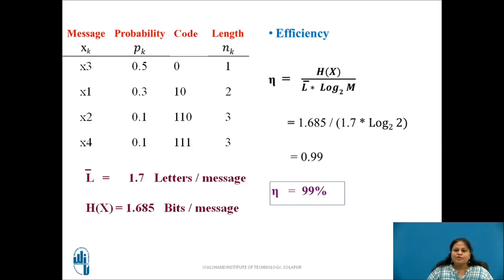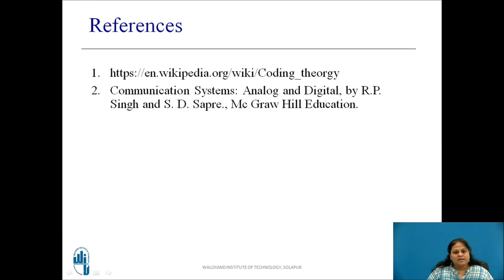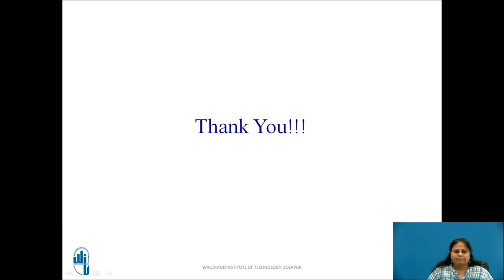Thus, we have seen how Shannon-Fano coding technique is applied to find codewords and efficiency. In this case, there was no ambiguity in partitioning the messages — we were able to decide the partition easily. But there are some cases when there is confusion in where to apply the partition. In the next session, we will see how to solve such problems having ambiguity in them. These are the references used. Thank you.